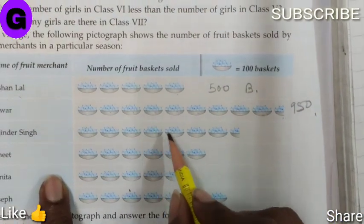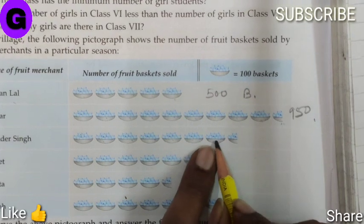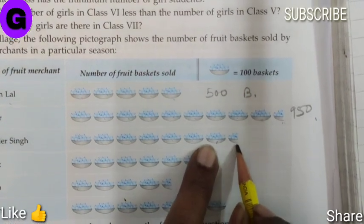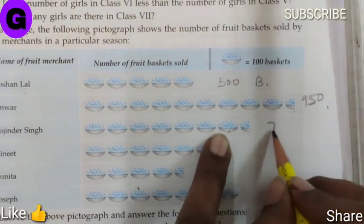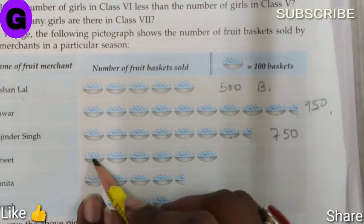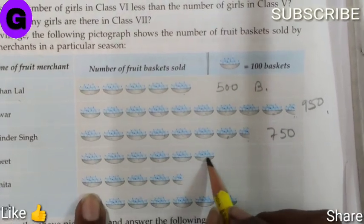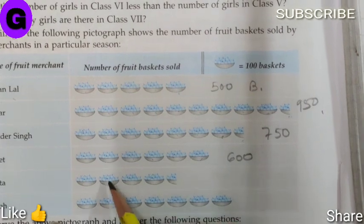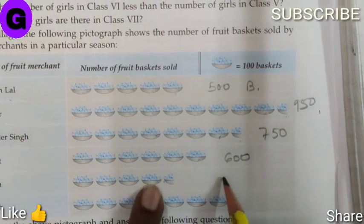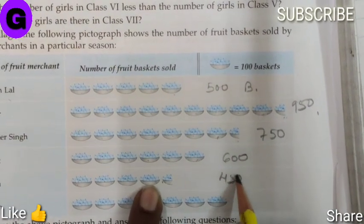Martin has 7 and a half baskets, so 700 plus 50 equals 750. Joseph has 4 and a half baskets, so 400 plus 50 equals 450.